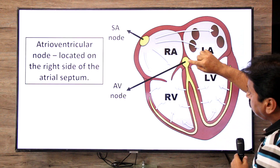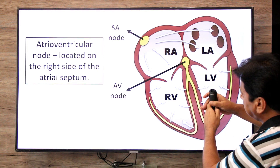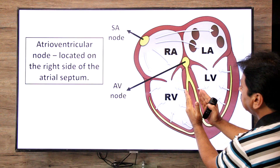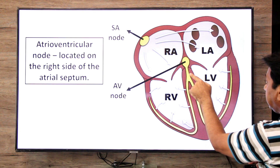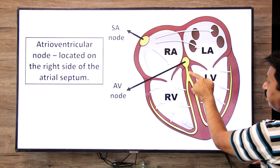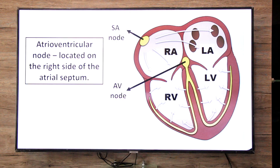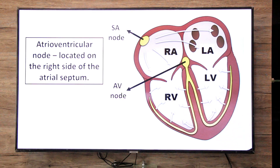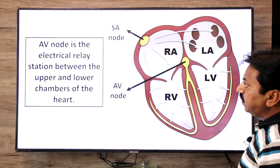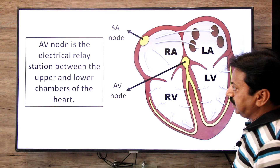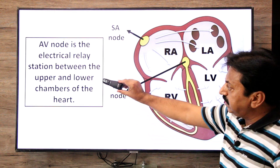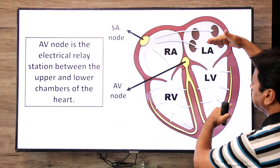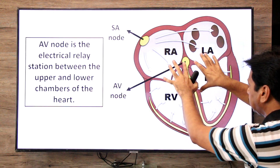The AV node uses an elongated segment called the Bundle of His — also known as the atrioventricular bundle — to send signals into the ventricular septum. The Bundle of His is an elongated segment connecting the AV node to the left and right bundle branches. Think of the AV node as a station between the upper chambers (atria) and the lower chambers (ventricles), acting as a relay station to pass the signal forward.